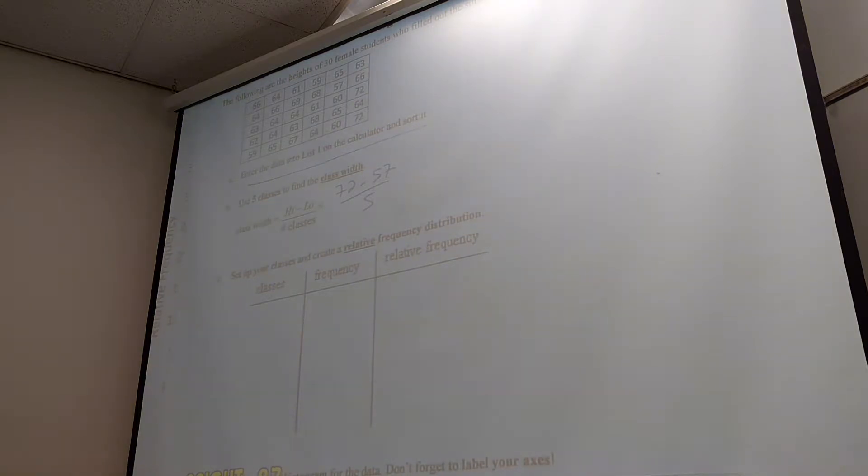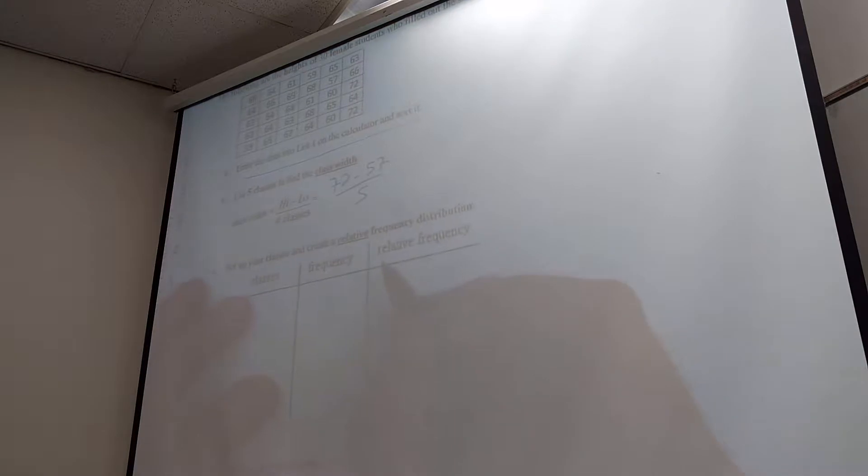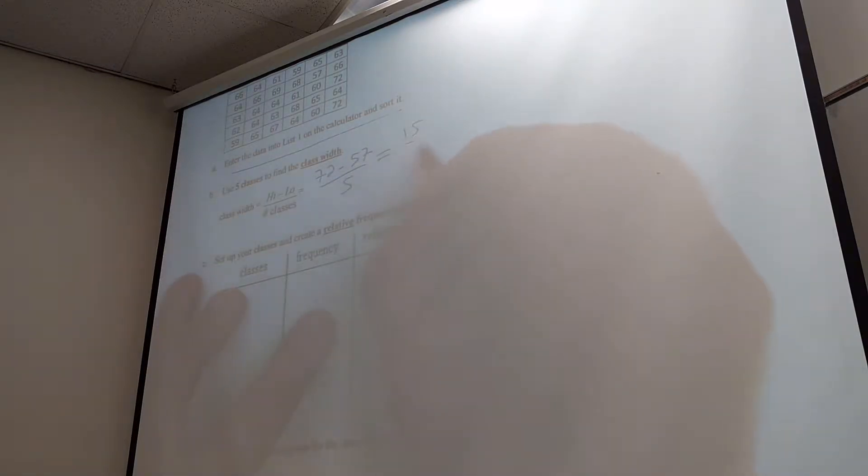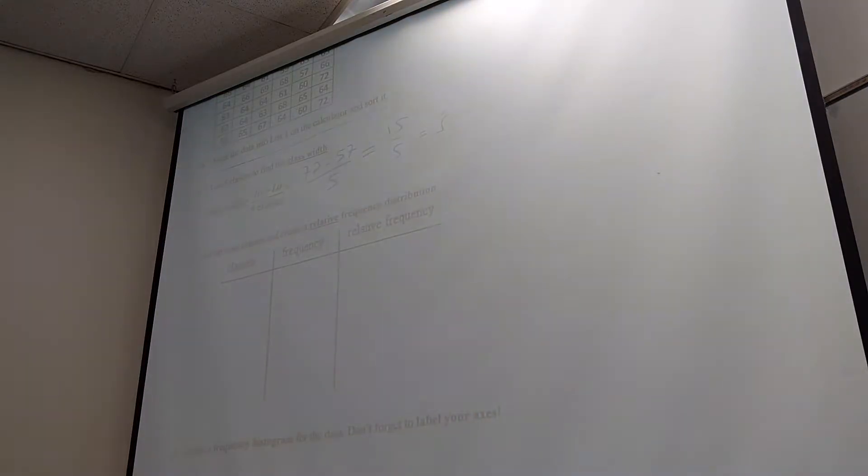Does that make sense? Because then that means you have 30 data points actually in there. Just make sure you get all the data in. Because it sucks to do a whole problem without all the data. So thank God you have somebody who gets a partial credit. So here it would be, what was it? I forgot to write, 72? Minus 57, 57 over 5, because I want you to use 5 classes. Oh crap.